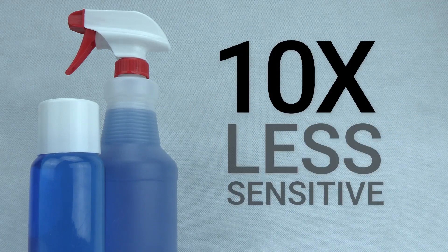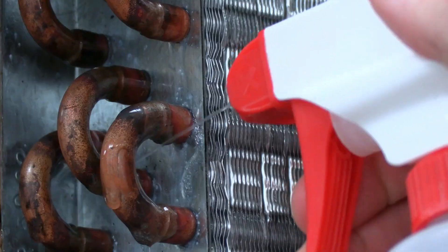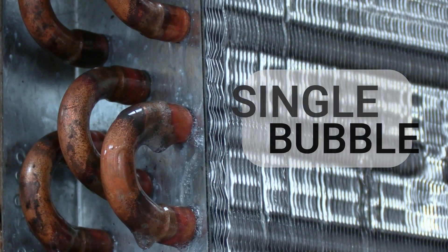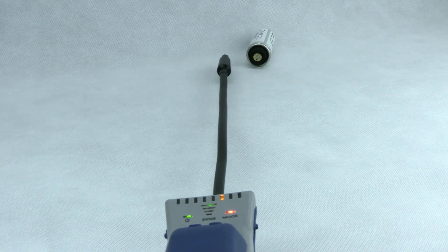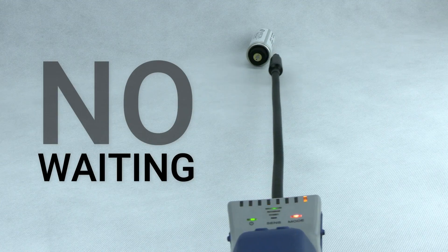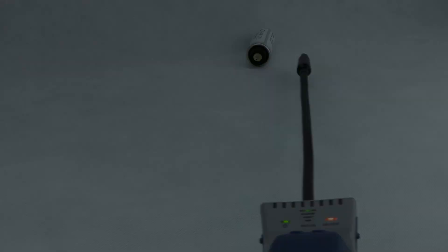At these smaller leak rates, it can take several minutes to form just one bubble big enough to see, where an electronic detector will find the leak almost instantaneously. With soap bubbles, you won't always be able to reach or see the suspect leak area.